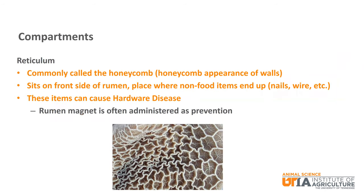The second compartment is the reticulum. It is commonly called the honeycomb because of the honeycomb appearance of the reticulum wall. The reticulum sits in front of the rumen and is the place where non-food items end up after being ingested. This could include nails, wire, and other hardware items. These items can puncture the reticulum wall and cause hardware disease, which could lead to death. Rumen magnets are commonly administered to ruminants as a prevention for hardware disease.